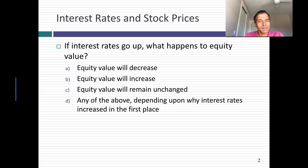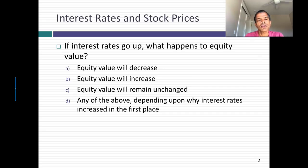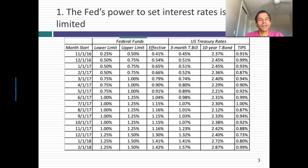At first sight the answer seems obvious. If you think about any discounted cash flow model, when interest rates go up, discount rates go up, and if you hold all else constant, value should go down. So the answer seems to be A — but that answer is actually wrong. In this session, I'd like to talk about why it's so dangerous to jump to conclusions about the relationship between interest rates and stock prices.